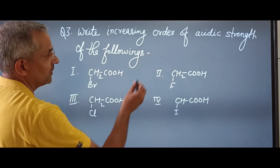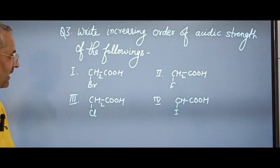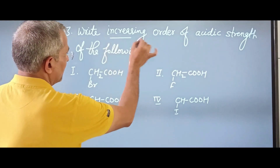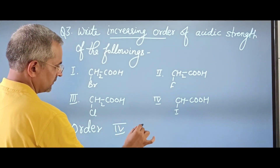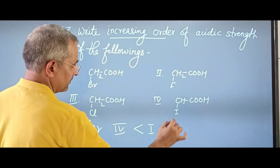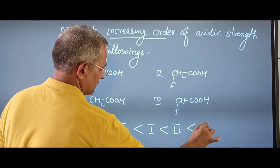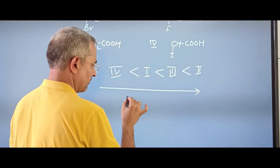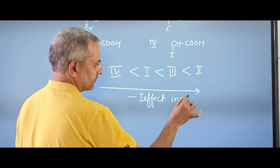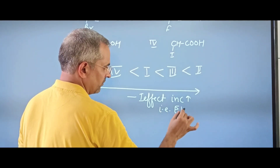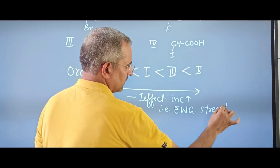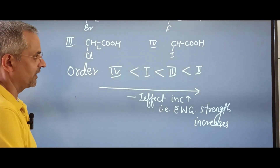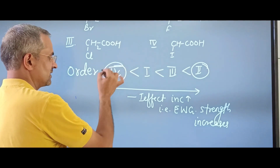The next question also asks for the increasing order of acidic strength of the following compounds. The order will be: fourth, then first, then third, then second being most acidic. As we move across this series, the minus I effect (electron withdrawing group strength) increases, which increases acidic strength. Therefore, the compound with the strongest electron withdrawing group is most acidic, and the one with least is least acidic.